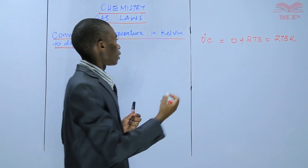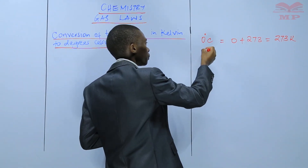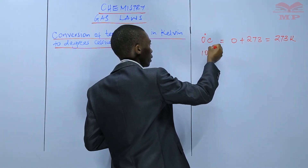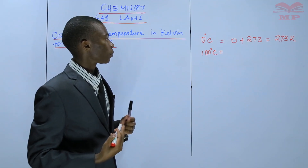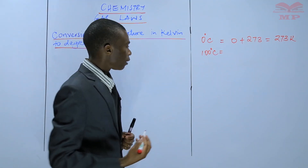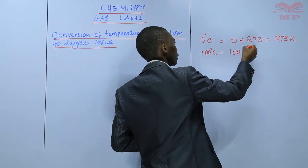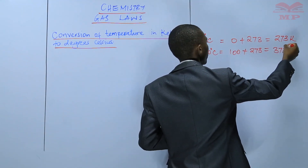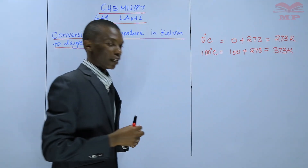For example, if you want to convert 0 degrees Celsius to Kelvin, it will be 0 plus 273, which gives you 273 Kelvin. Another example: 100 degrees Celsius converted to Kelvin will be 100 plus 273, which gives you 373 Kelvin.